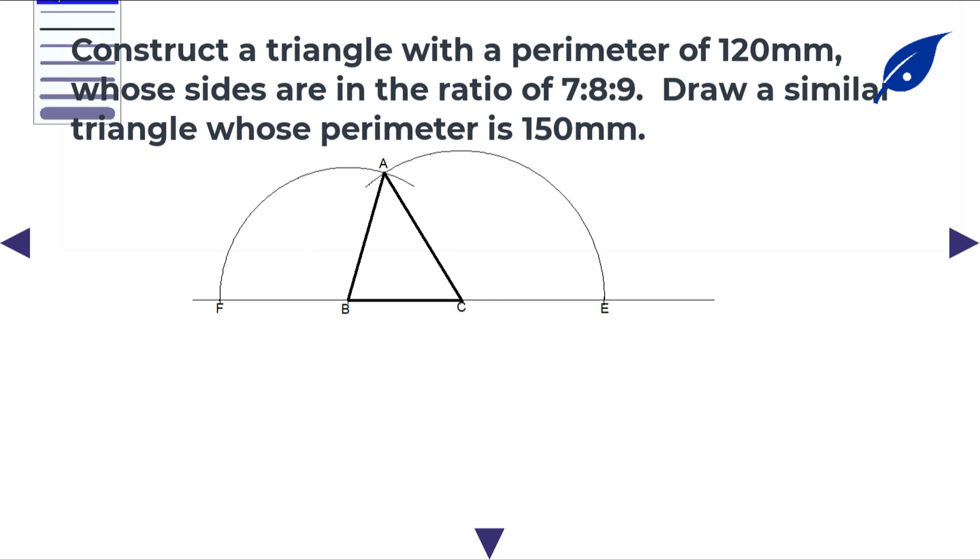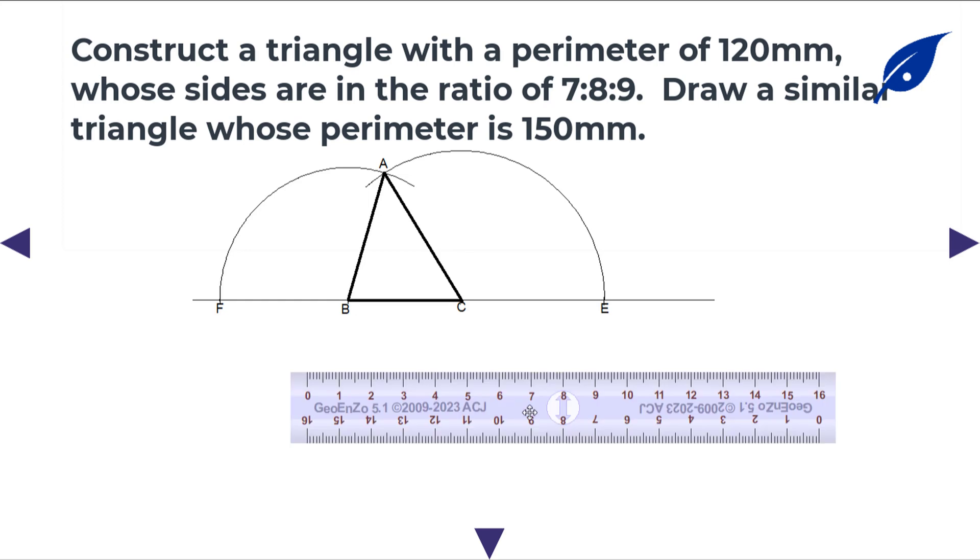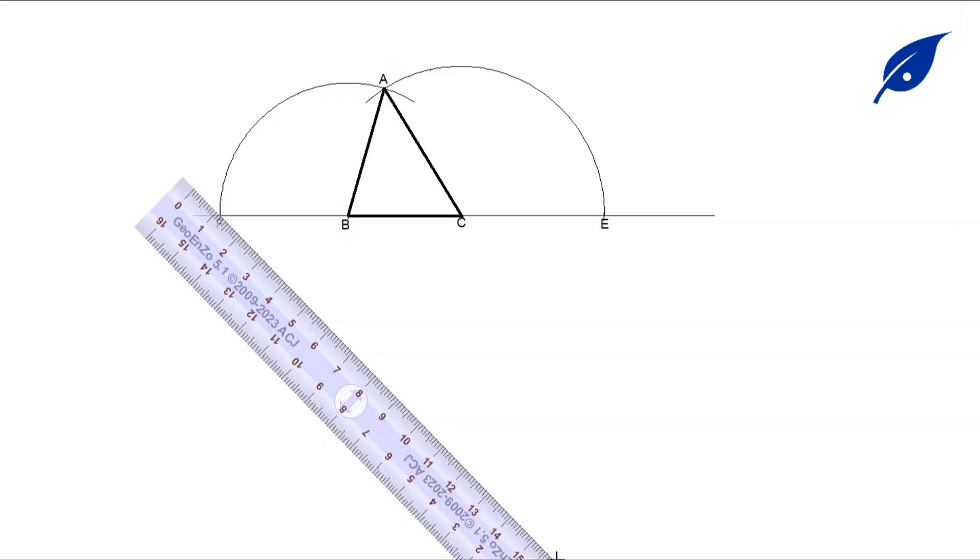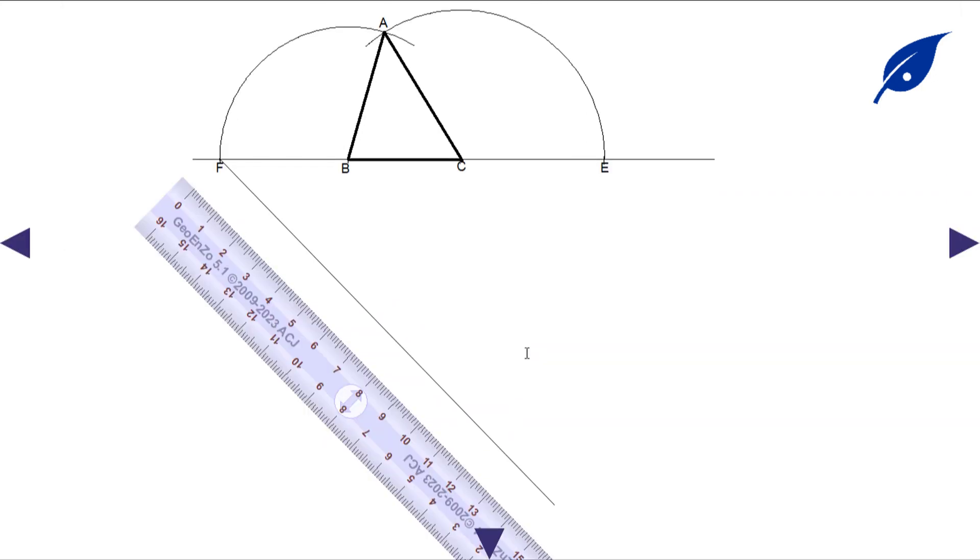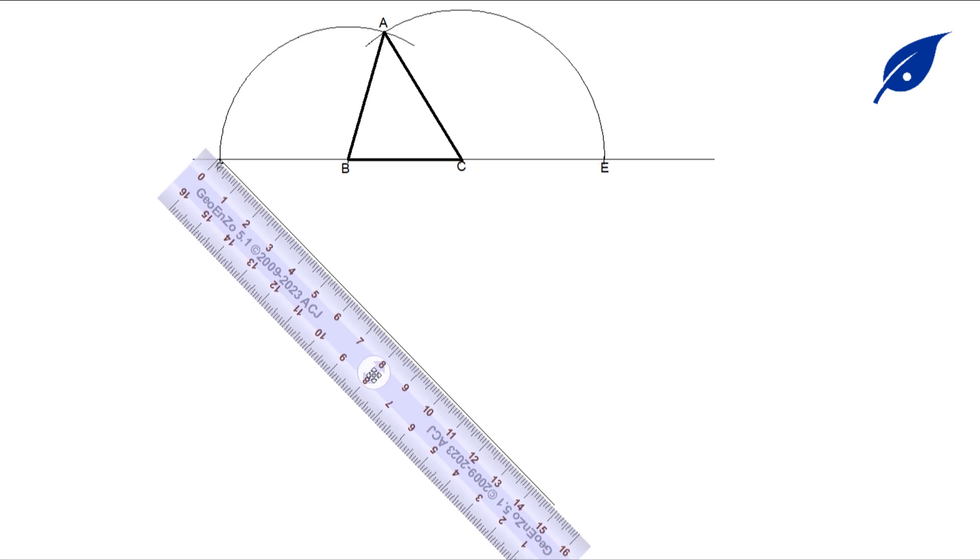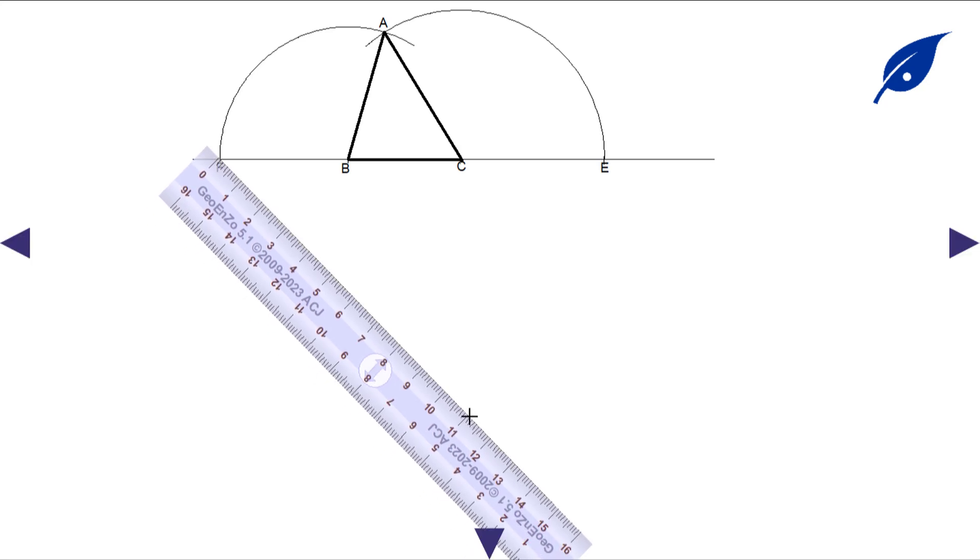Now we're going to draw a similar triangle but with a different perimeter, which is 150 millimeters.